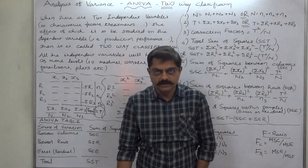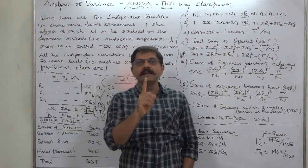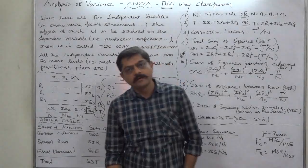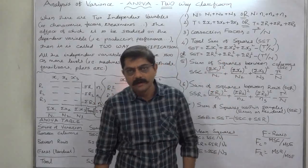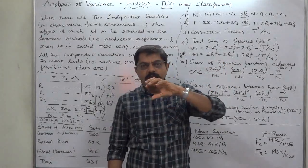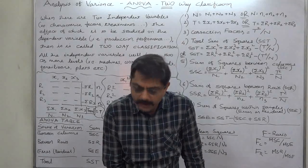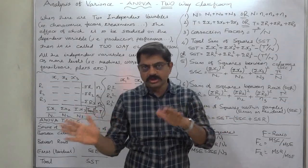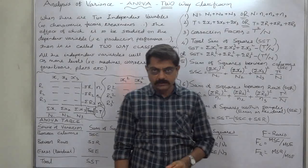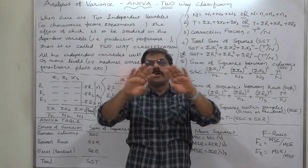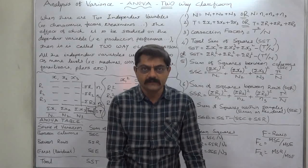We have already discussed one-way classification. In case of one-way classification, we check the effect of a single independent variable on a dependent variable — various levels of a single independent variable and its effect on a single dependent variable. Now, when we want to check the effect of two independent variables or varieties of two independent variables on that single dependent variable, it is called two-way classification.